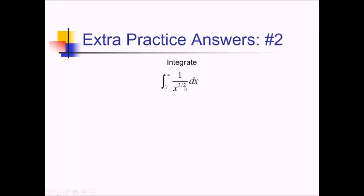For this problem, we want the integral from 1 to infinity of this expression. Since we have this infinite limit, this is an improper integral and has to be rewritten using a limit. So I'll write this as the limit as b approaches infinity of the integral from 1 to b, and I'm going to rewrite the integrand as x to the negative 3 halves power to make it easier to take the antiderivative. Using the reverse power rule, this bumps up to a negative 1 half power.